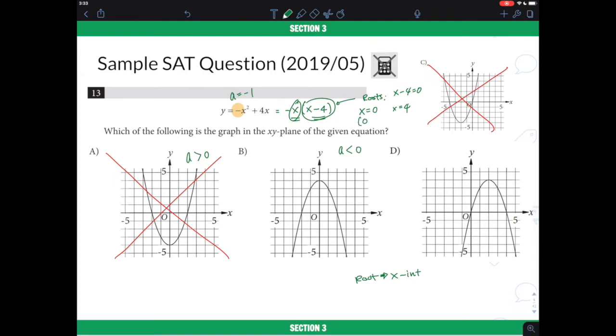That means we have two x-intercepts right here. We have 0, 0, and we have 4, 0. So your job is now very simple. Pick the graph that has these two x-intercepts. And if you look at it, only choice D would have this, would match the description that we had from the quadratic equation.